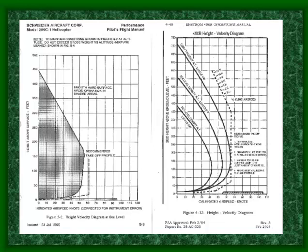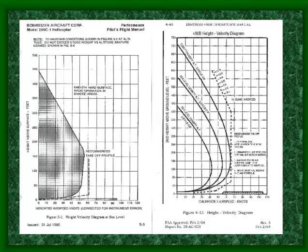Let's talk about the lower shaded area first. On the takeoff profile, you want to get rolling, and on the Schweitzer around 20 to 25 knots they want you to start climbing. That lower area represents being fast and near the ground — if the engine quits, you need to flare to slow the aircraft. But if you're only five or ten feet above the ground and you flare, you're probably going to strike your tail boom.